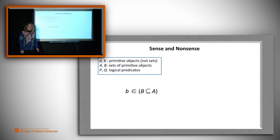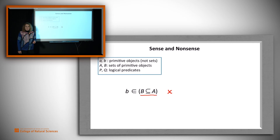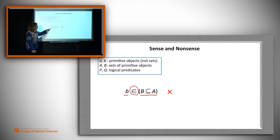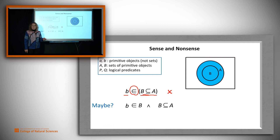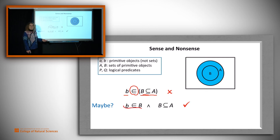Let's consider this example: b is an element of (B is a subset of A). That is nonsense. 'B is a subset of A' is a logical claim — it's either true or false. 'Element of' requires that its second argument be a set, but 'B⊆A' is not a set, it's a logical claim. So this is junk. What somebody might have had in mind is: B is a subset of A, and perhaps little b is an element of some inner piece of that. What we should write instead is: b∈B and B⊆A — two logical claims joined by 'and'.